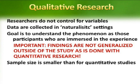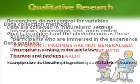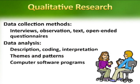The sample size is usually smaller than in quantitative studies. The data collection methods — and this applies to all forms of qualitative research — involves interviews, observation, and they can use texts, but usually they use open-ended questionnaires. The data analysis may involve describing the phenomenon of concern, and in grounded theory they use coding, and interpretation is also a method. They usually come up with themes or patterns, and sometimes computer software programs are used to assist the qualitative researcher.